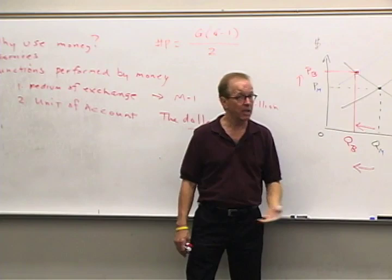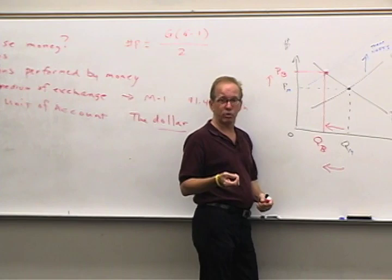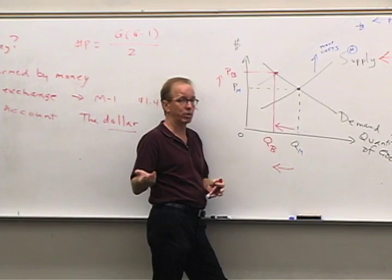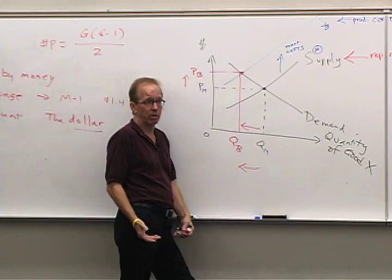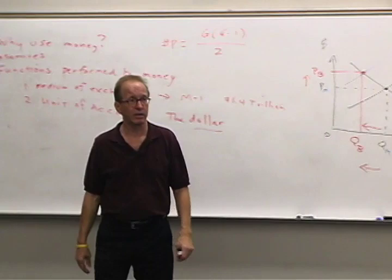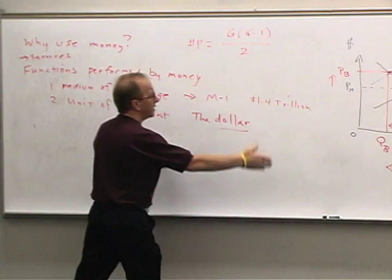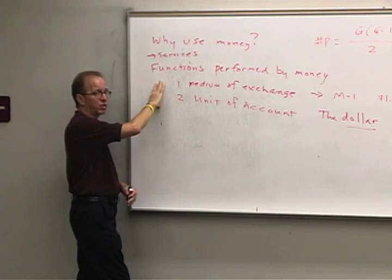Here's another thing: nobody forces us to use money today. If you wanted, you could tell somebody you'll work for two dozen eggs an hour — we have the option of bartering even today. But that's an inferior possibility. People don't want to do it or they would be doing it. There's no law against it, but we don't anyway. That tells us it's an inferior outcome — we don't want to barter, we want lower transactions costs. These are the two areas where money has lowered transaction costs and allowed us to have a higher standard of living.